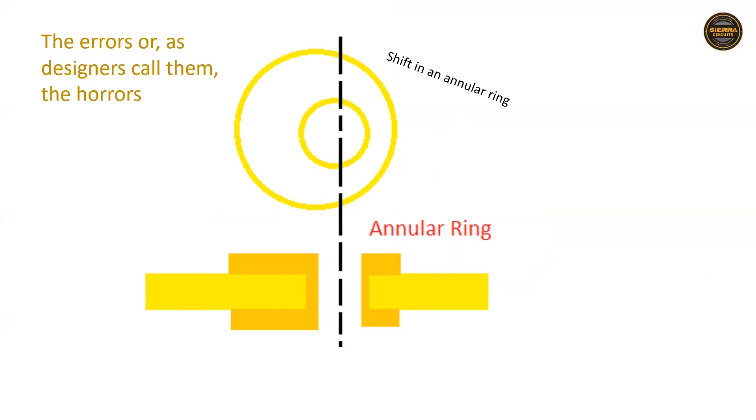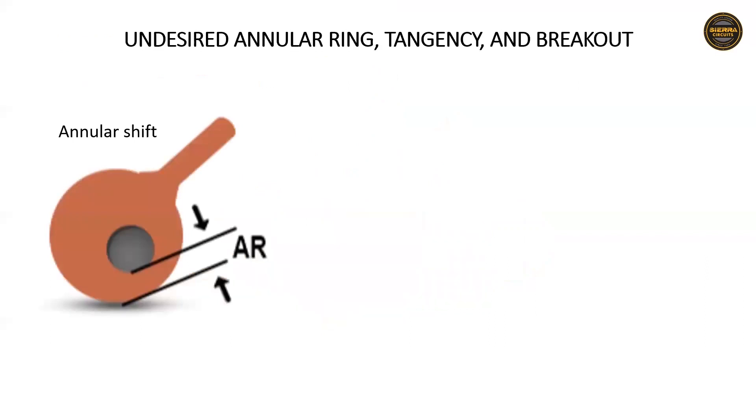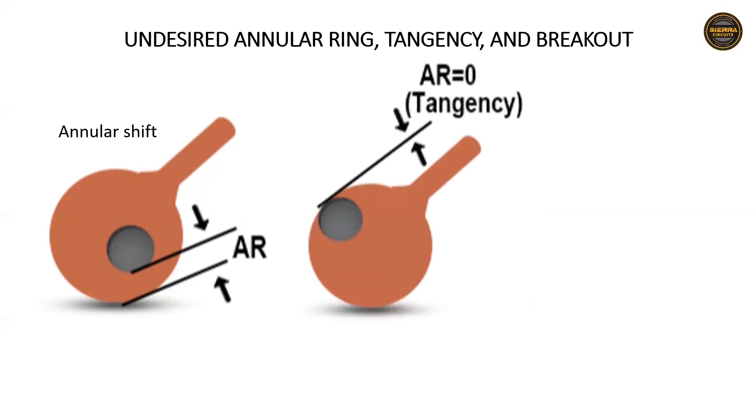Some of the common annular ring errors are: annular shift, where the drilled via slightly drifts away from the center but still establishes good electrical connectivity; annular tangency, which occurs when the drilled hole touches the pad's edge and can lead to electrical disconnection due to insufficient annular ring area; and annular breakout, where the drill bit wanders outside the pad causing connectivity and assembly related issues.